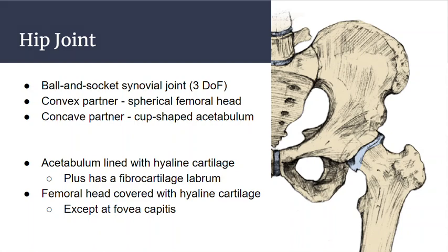Let's look at some features of the hip joint, both the ligaments and the movements. The hip joint is a ball and socket joint. It has a spherical femoral head that's convex, and it goes into the concave acetabulum on the os coxa. The acetabulum is lined with hyaline cartilage and a labrum. The femoral head is also covered with hyaline cartilage, except the fovea capitis, which is a notch we saw in the bony section.